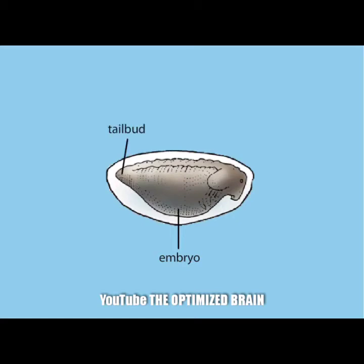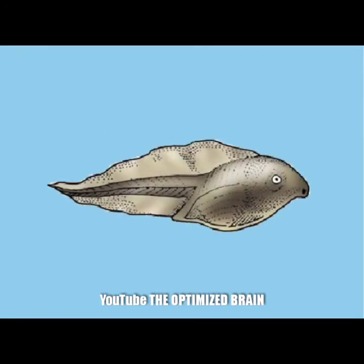After embryonic development is complete, the embryo hatches and becomes a larva, also called a tadpole. The tadpole has external gills for respiration.